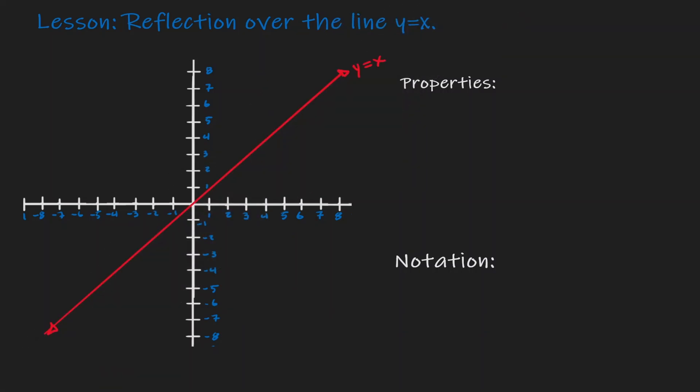Now let's choose a random point. If we want to reflect this point over the line y equals x, think about it as if we're folding this plane over the line y equals x. If that's the case, then this point on the left-hand side should end up somewhere on the right-hand side of the line y equals x. So we have some sense of direction, but where exactly does it land?